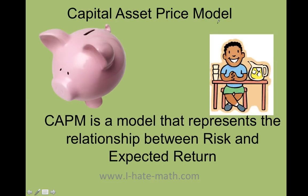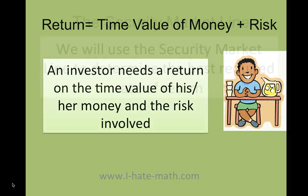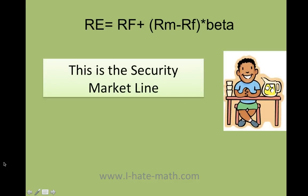The capital asset pricing model is a model that represents the relationship between risk and return. As an investor, you have a time value of money plus risk that you're lending to Billy. We need to tell him how much money we want back from our investment. The security market line is part of this model and gives us the required rate of return.